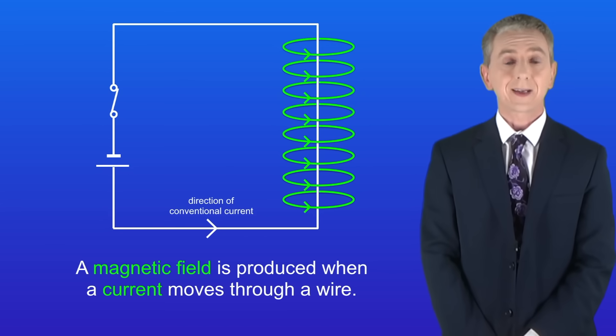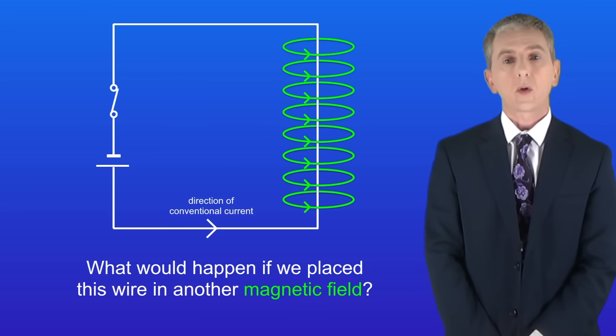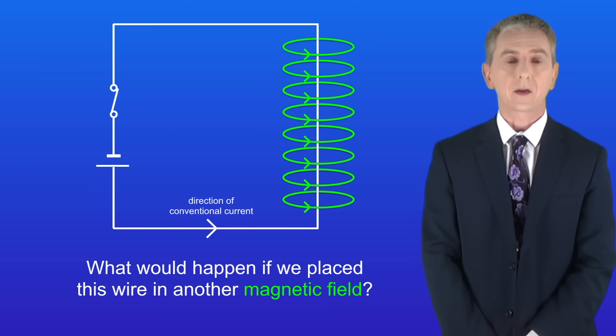In a previous video we saw that a magnetic field is produced when a current moves through a wire. So the question is, what would happen if we place this wire in another magnetic field?